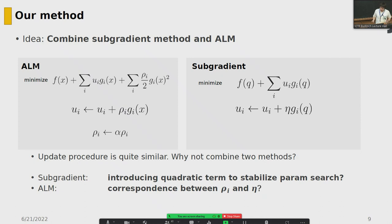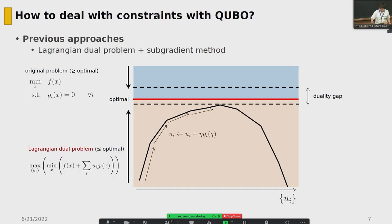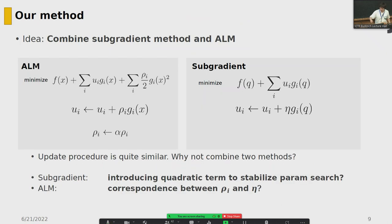Our idea is to combine the subgradient method with the augmented Lagrangian method. The subgradient method seems reasonable because it finds upper and lower bounds, but it is unstable. If we can apply a quadratic term to the subgradient method, we may be able to stabilize the parameter search. Also, the update rules of the augmented Lagrangian method and subgradient method are quite similar — so is there some correspondence between low_i and eta?